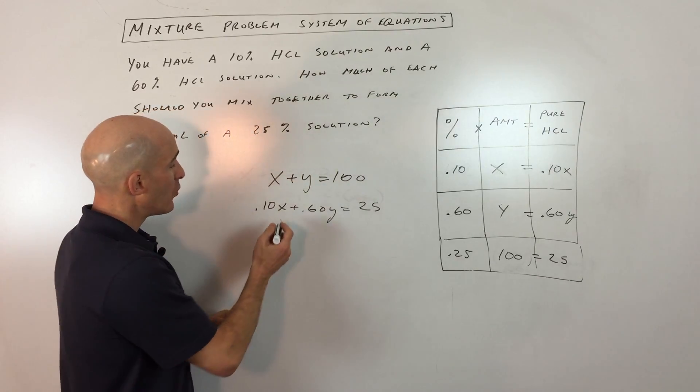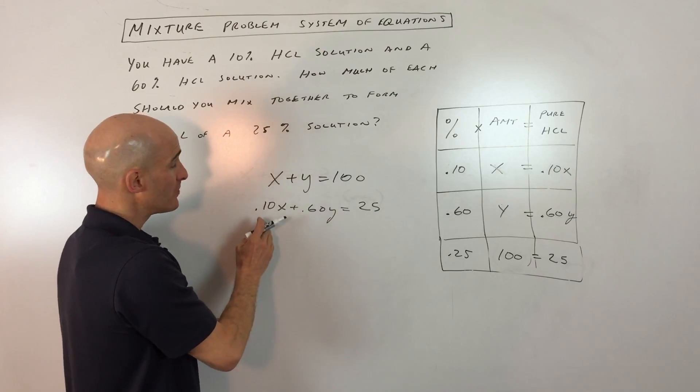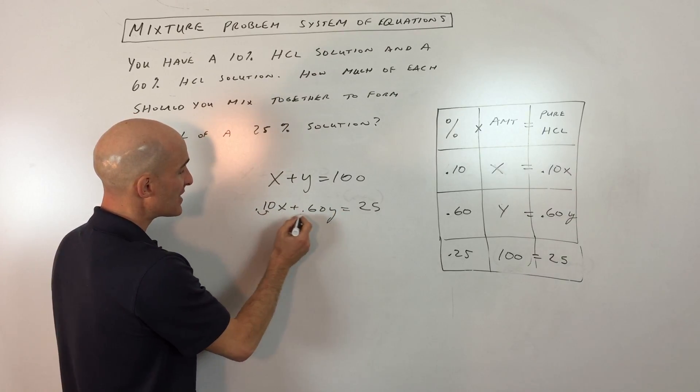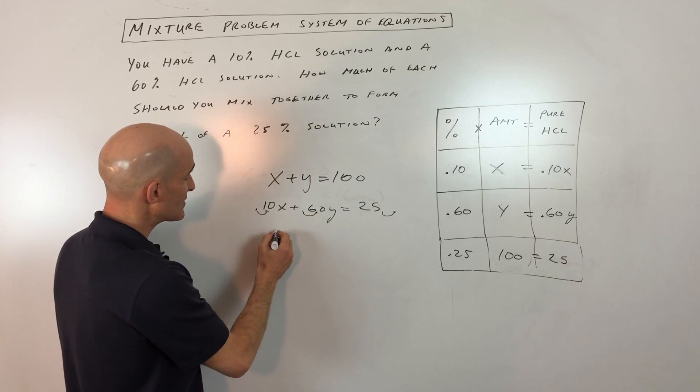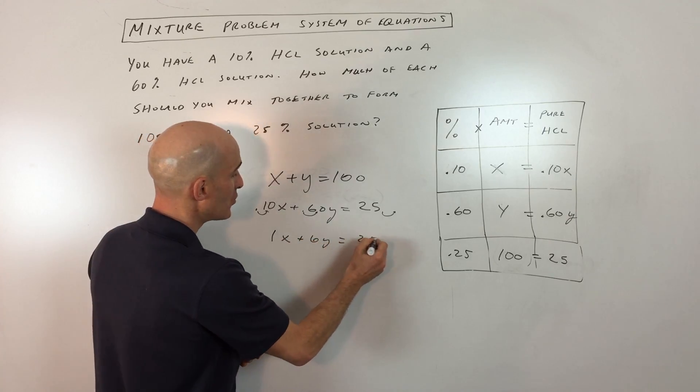So let's go ahead and do that. So what I'm going to do here is I'm going to multiply this equation by 100. Actually, I'll multiply it by 10 just to clear the decimals. So if we multiply by 10, that moves the decimal one place to the right. So that's going to make this 1X plus 6Y equals 250.